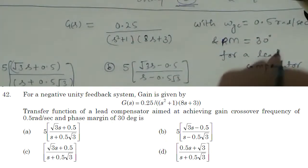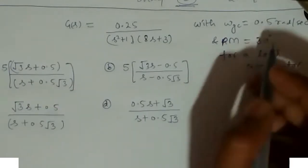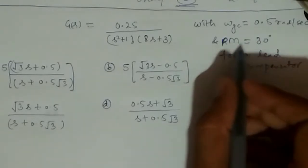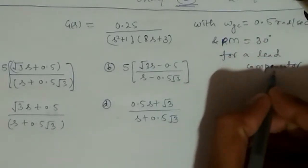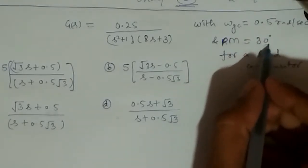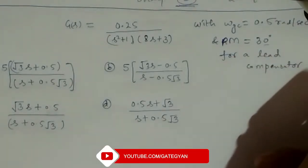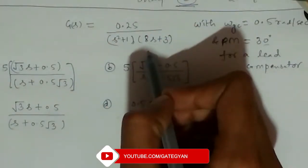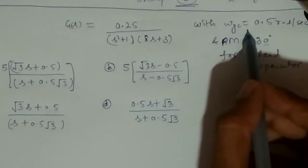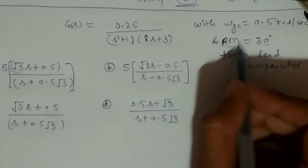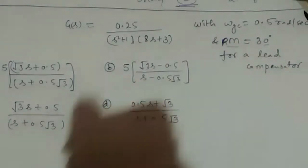For this lead compensator, we are given ωgc = 0.5 rad/s (gain crossover frequency) and phase margin PM = 30°. We have to design a lead compensator for this system with the given gain crossover frequency and phase margin. From the given options, we need to identify the correct compensator.